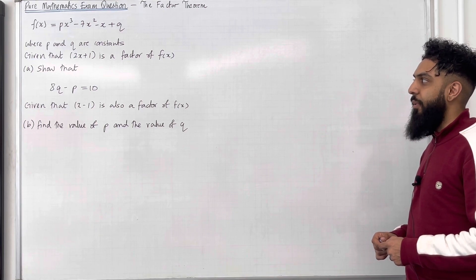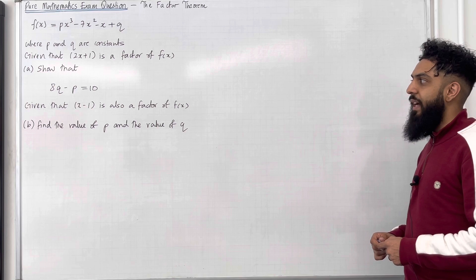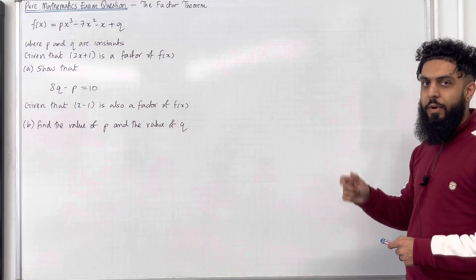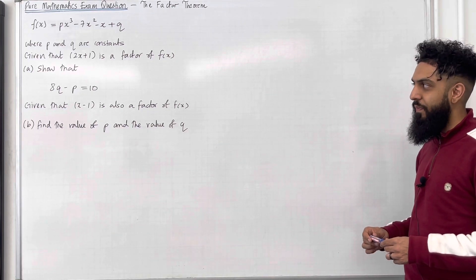Given that 2x plus 1 is a factor of f of x, part a: show that 8q minus p is equal to 10. Please pause the video, have a go at part a, and once you've got your complete solution, then play the video.